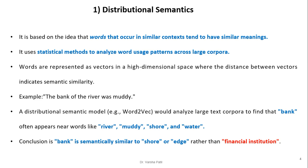Distributional semantics is based on the idea that words occurring in similar contexts tend to have similar meanings. It uses statistical methods to analyze word usage patterns across large corpora. Words are represented as vectors in a high-dimensional space, where the distance between vectors indicates their semantic similarity.